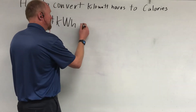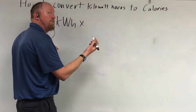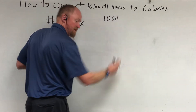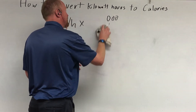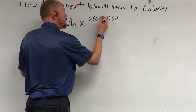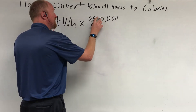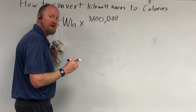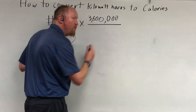Remember that a kilowatt is a thousand watts — that's a thousand joules every second. And there are three thousand six hundred seconds in an hour. So if you multiply by three million six hundred thousand, you get the number of joules in a kilowatt hour.